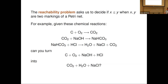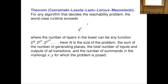The reachability problem is asking: can you decide if one marking is less than or equal to another? This is sometimes quite practical — chemists are very interested in knowing if, given a bunch of chemical reactions, they can turn one set of chemicals into another. The reachability problem is really hard. I'm not a computer scientist but this result is so cool I can't resist mentioning it.